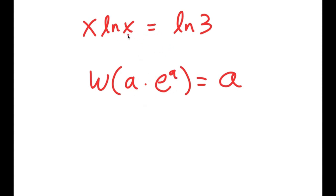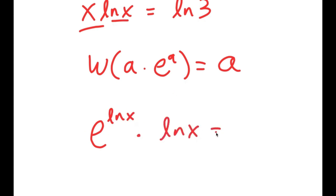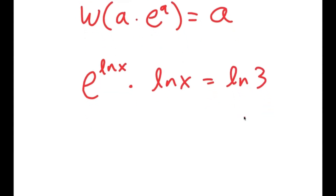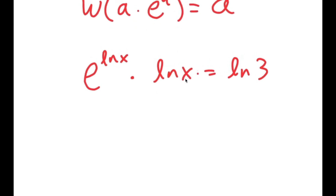I'm going to rewrite x as e to the power of ln of x, because e to the power of ln cancel out, leaving just x. So x is the same thing as e to the power of ln x. That gives me e to the power of ln x times ln x is equal to ln 3. Notice this is in the form a times e to the power of a, where a is ln x.